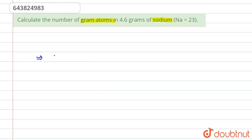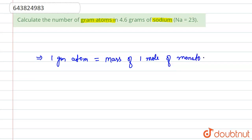We know that one gram atom is equal to the mass of one mole of a monoatomic element. So we can write that one gram atom equals the mass of one mole of a monoatomic element. Now, one mole of Na equals 23 gram atoms of Na.